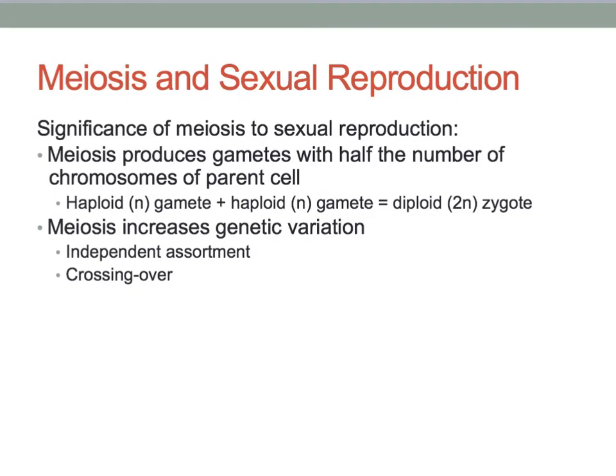Meiosis is essential to the process of sexual reproduction. Meiosis produces gametes with half the number of chromosomes of each parent cell. Unless the chromosomes have halved first, the offspring would have double the number of chromosomes each time. One haploid gamete plus one haploid gamete equals one diploid zygote.